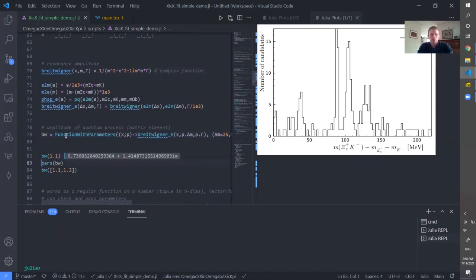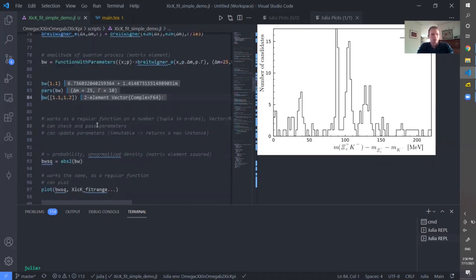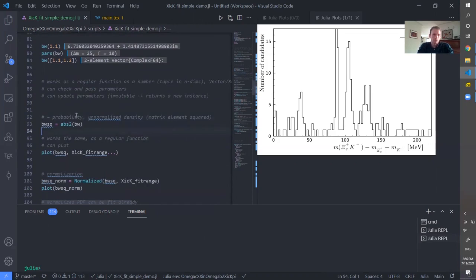And once it's created, I can use it as a regular Julia function calling number argument or broadcasting over the vector. And that returns complex. So I can also check the parameters of the function, which are shown here.